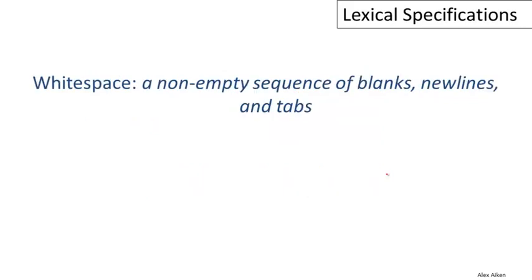Now, because we're doing a complete lexical specification, we also have to deal with parts of the string we're not really interested in. We have to have at least a specification of them so we can recognize them and throw them away. In particular, we have to be able to recognize white space. We're going to take white space to be a non-empty sequence of blanks, newlines, and tabs, even though there are other kinds of white space characters. These three will suffice to illustrate all the important points. A blank is relatively easy to write down — just single quotes around a blank space.